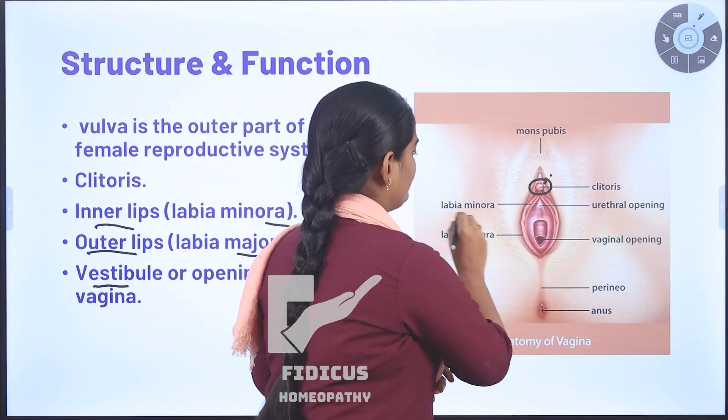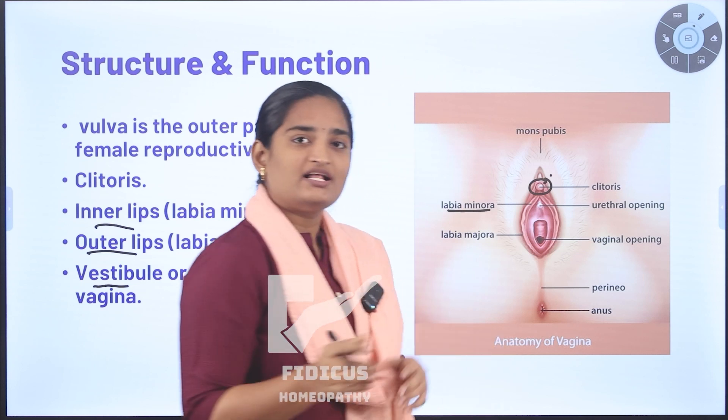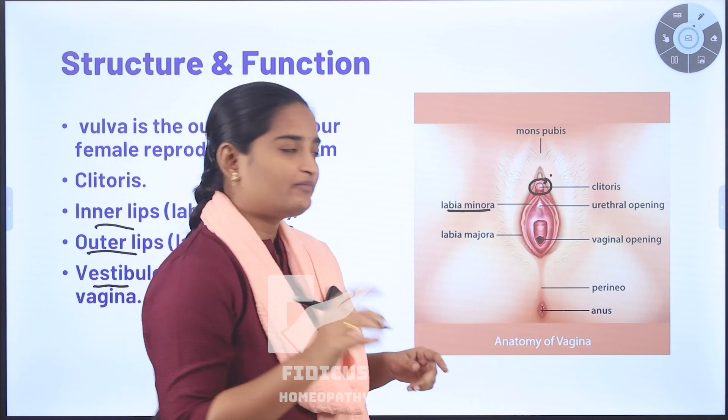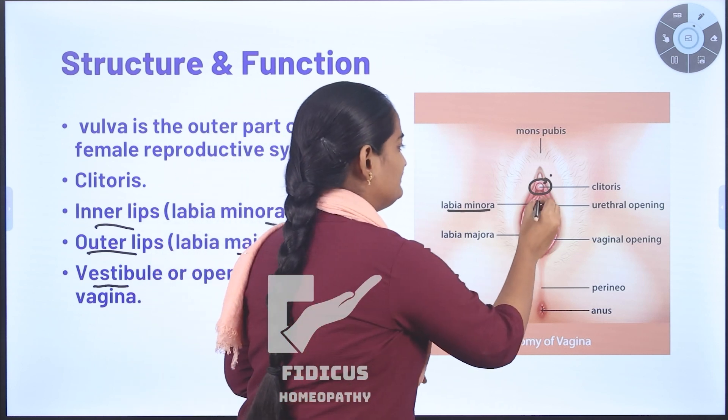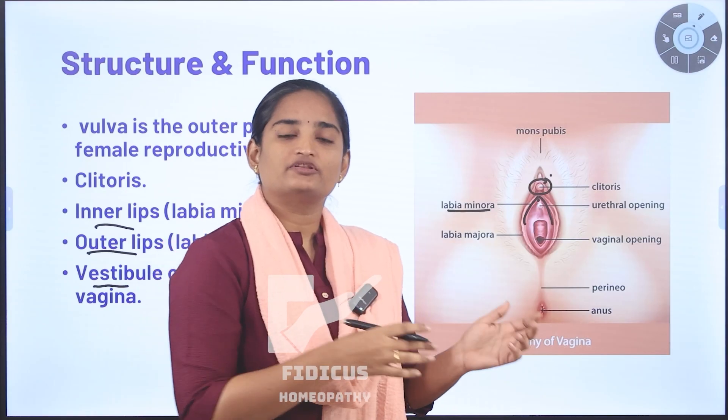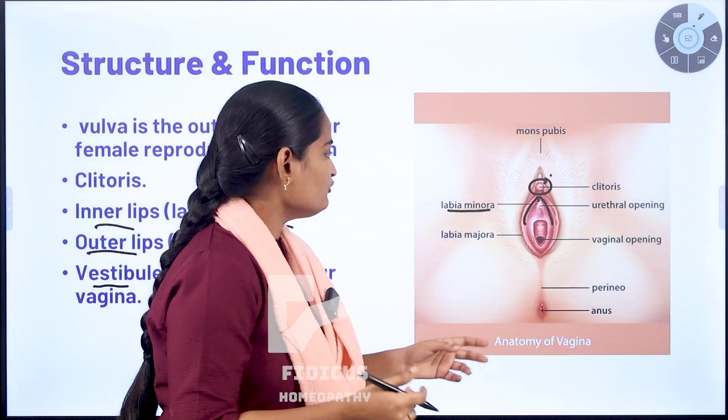Now coming to labia minora. Labia minora is also called as inner lips. There are two labia minora on either side. These are thin fleshy folds. Labia minora can protect the urethra and vagina.